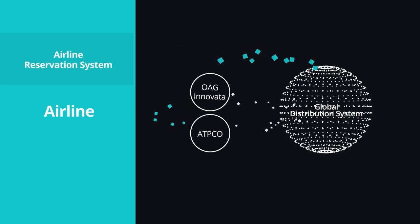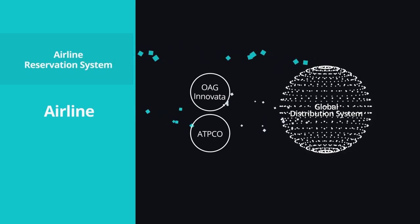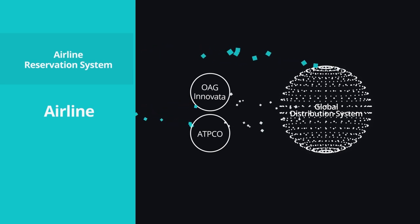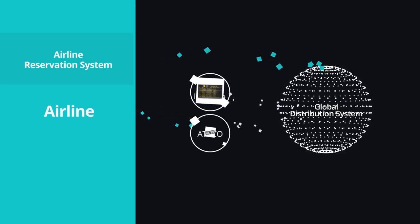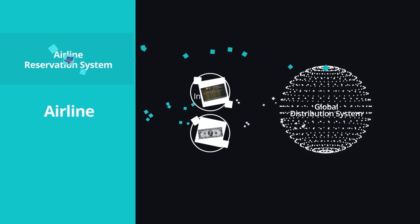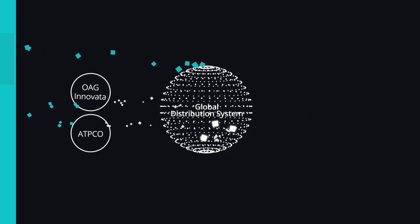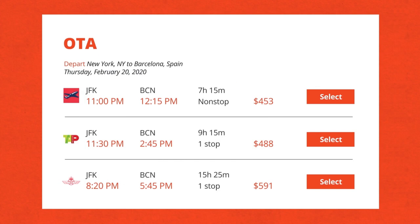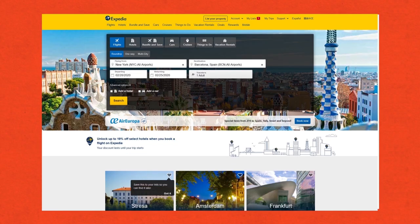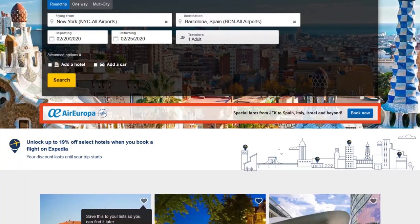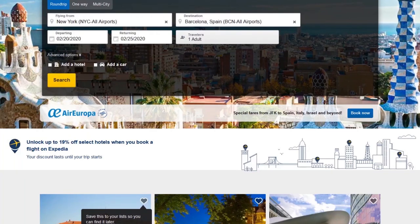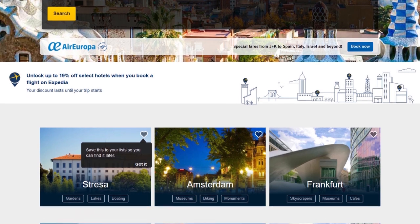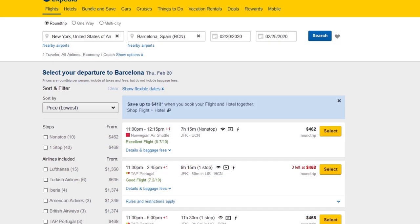The GDS makes real-time queries to all carriers that operate selected flights to check the availability of seats. Based on schedules, fares, and availability, the GDS creates offers and sends them back to the OTA, which displays them to a passenger. Additionally, OTAs may have exclusive agreements with airlines that allow them to sell tickets on more favorable terms. To maximize revenue, OTAs have to leverage their business interests and customer needs.